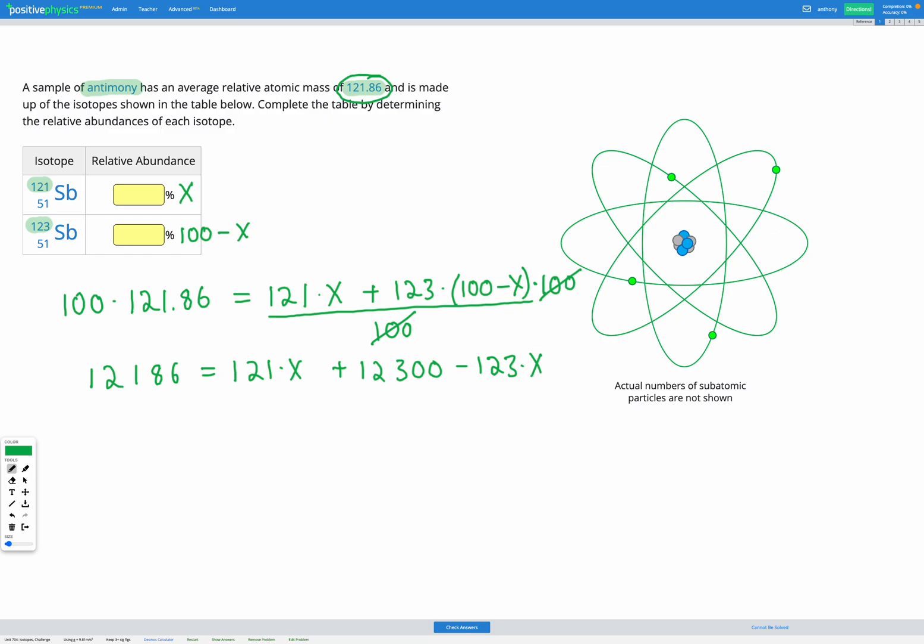Okay, so for my next step, I'm going to subtract 12,300 from both sides. Because that will cancel out there. And when I write out this next line, I'm going to combine those numbers. So on the left one, I do minus 12,300 plus 12,186. I'm going to get minus 114.